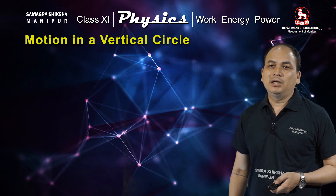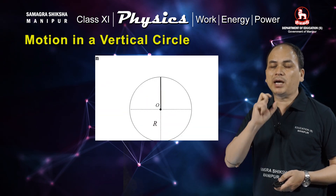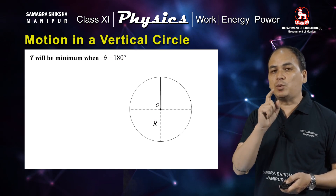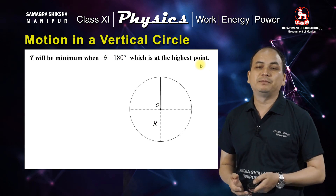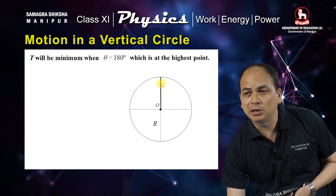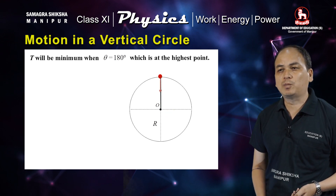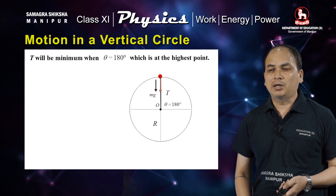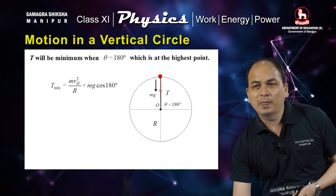Now, let us consider that this object is at the highest point. This is the expression when theta is 180 degrees. If theta is 180, cosθ equals minus 1, which corresponds to the highest point. The tension will be minimum, and the minimum tension is given by mVh²/r minus mg.